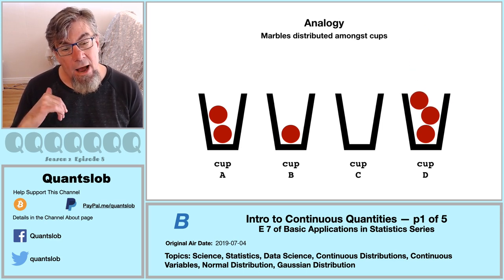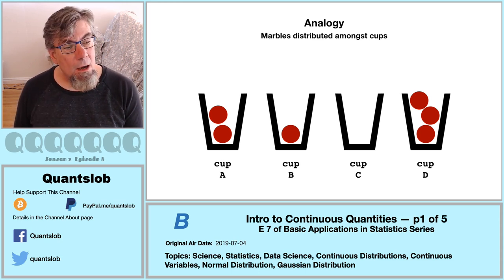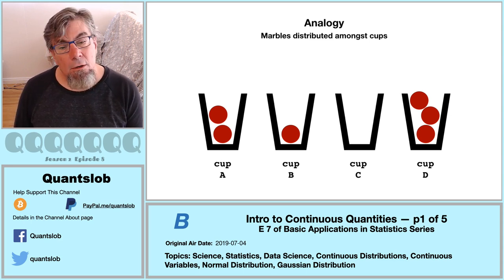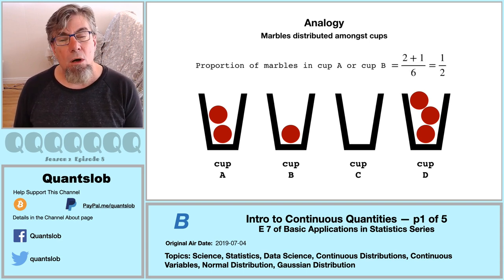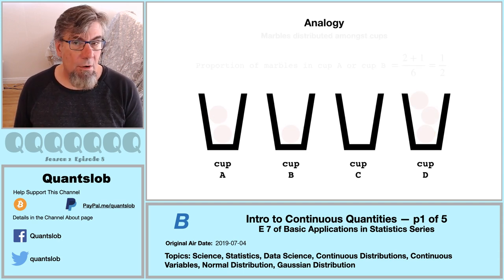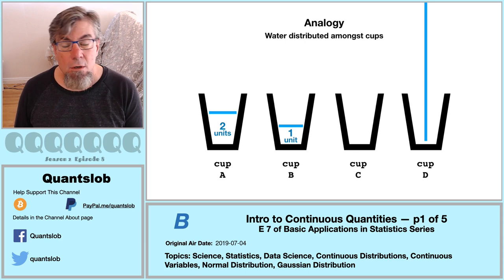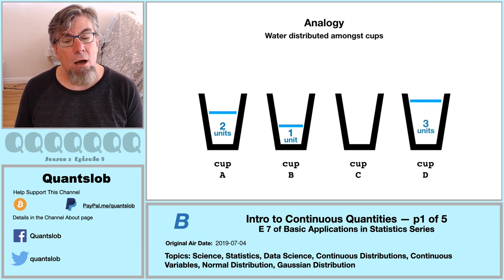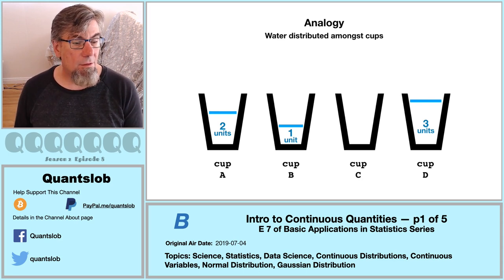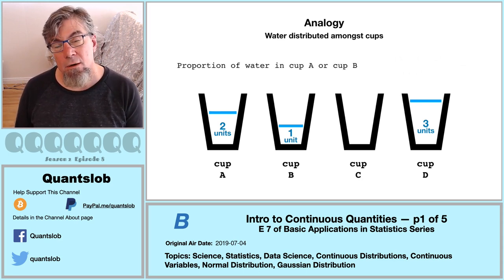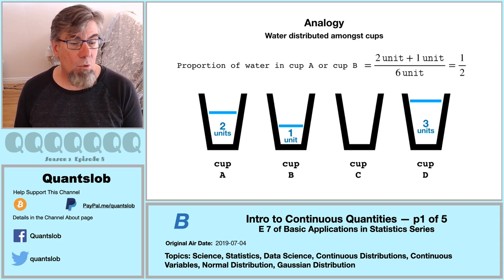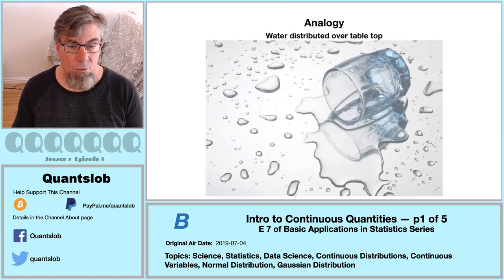I think I have an analogy that works pretty well here. Imagine we have six marbles distributed among four cups: two marbles in cup A, one in cup B, none in C, and three in cup D. This is easy to think about — for example, what proportion of marbles are in cup A or cup B combined? Not at all a problem. Suppose instead of marbles we have water distributed among these four cups: as long as we can measure how much water is in each cup, this distribution is also easy to work with. In the same spirit, if someone asks what proportion of water is in cup A or cup B — not at all a problem.